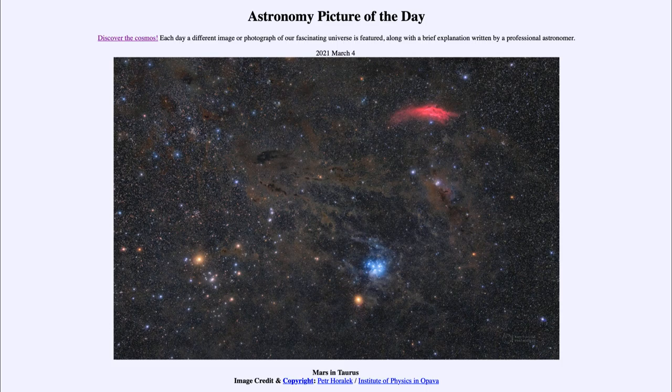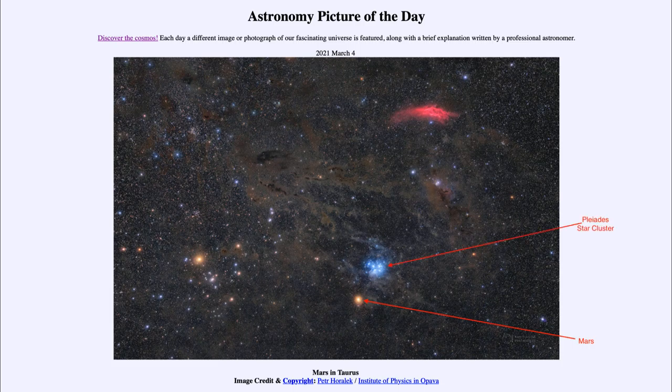And some of the things that we can see here are Mars is down towards the lower center of the image, very close to the Pleiades star cluster. So that blue cluster of stars is known as the Pleiades, very easily visible to the naked eye, known as the seven sisters. And that is where Mars was very close to just a couple of days ago.